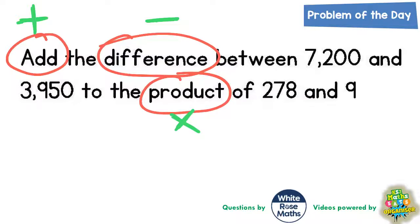So it's all about understanding those words and recognizing what they mean when you see them. Add is obviously add, difference is subtract and product means multiply. So job number one is we can't add anything together. We've actually got to do this adding bit last. Do the adding bit last because we've got to find the difference between 7200 and 3950 and the product of 278 and 9 first.